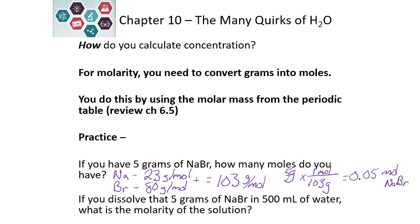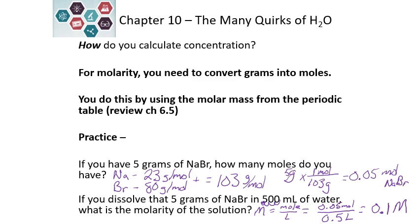Molarity is moles of solute over liters of solution. We take 0.05 moles divided by the liters of solution. We have 500 milliliters — there are 1,000 milliliters in a liter, so we move the decimal three places to the left to get 0.5 liters. Our solution concentration is 0.1 molar.